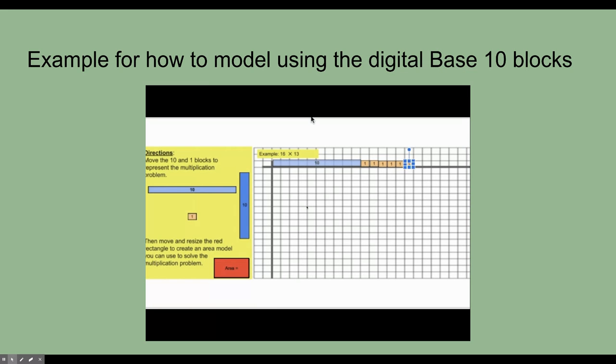Next, I'm going to represent 13, this time on the vertical line. And so I'm going to use my vertical 10 block to make sure that everything lines up well. So to represent 13, I need one block of 10. And then I need three blocks of one, one, two, three.